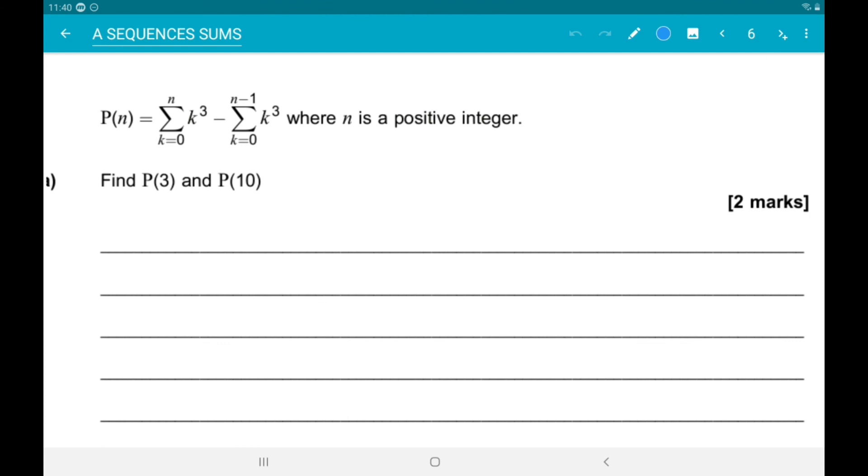So again, p of n is actually just n cubed. So p of 3 is 27 and p of 10 is 1000.